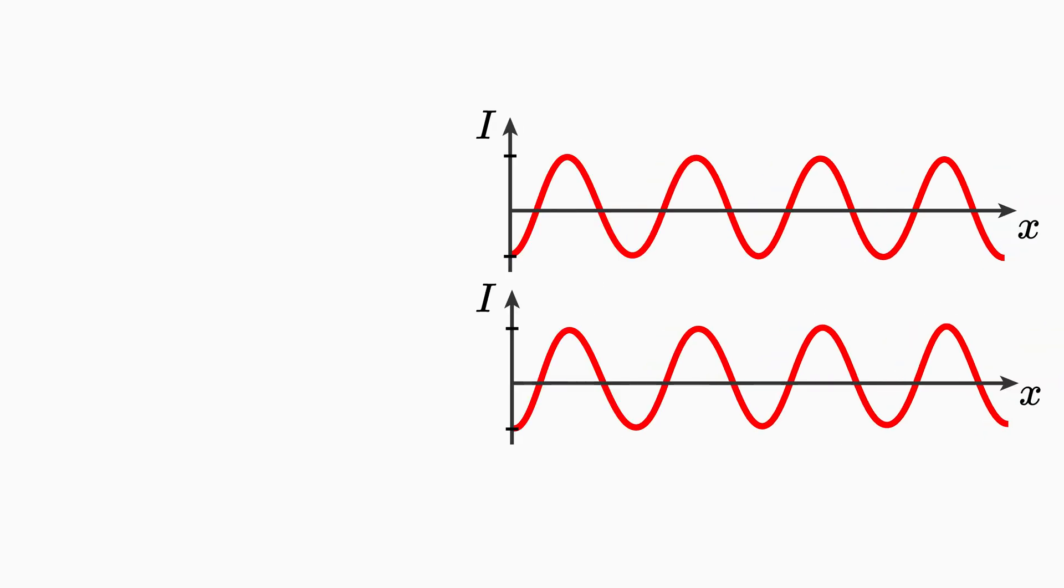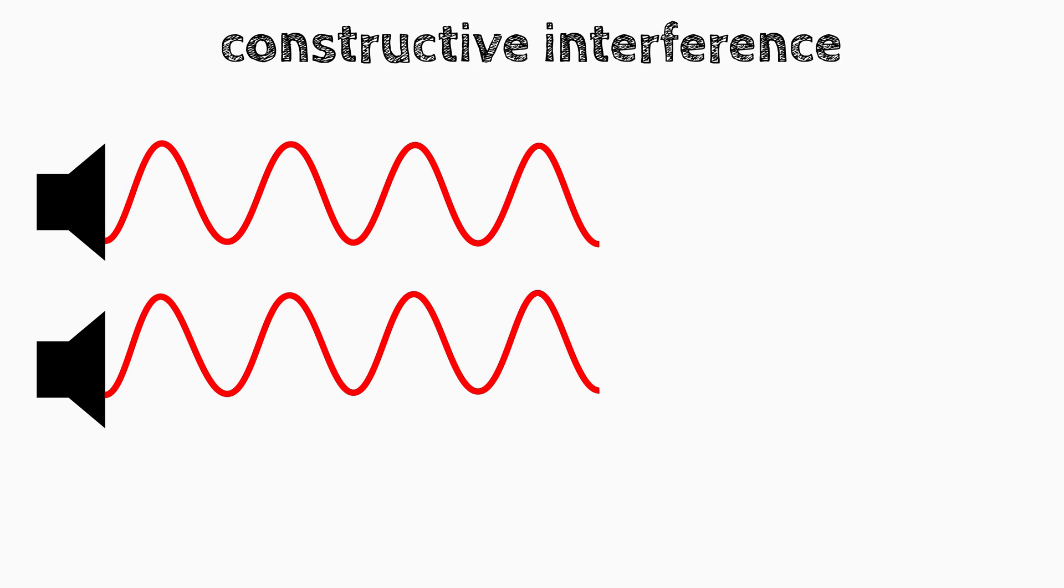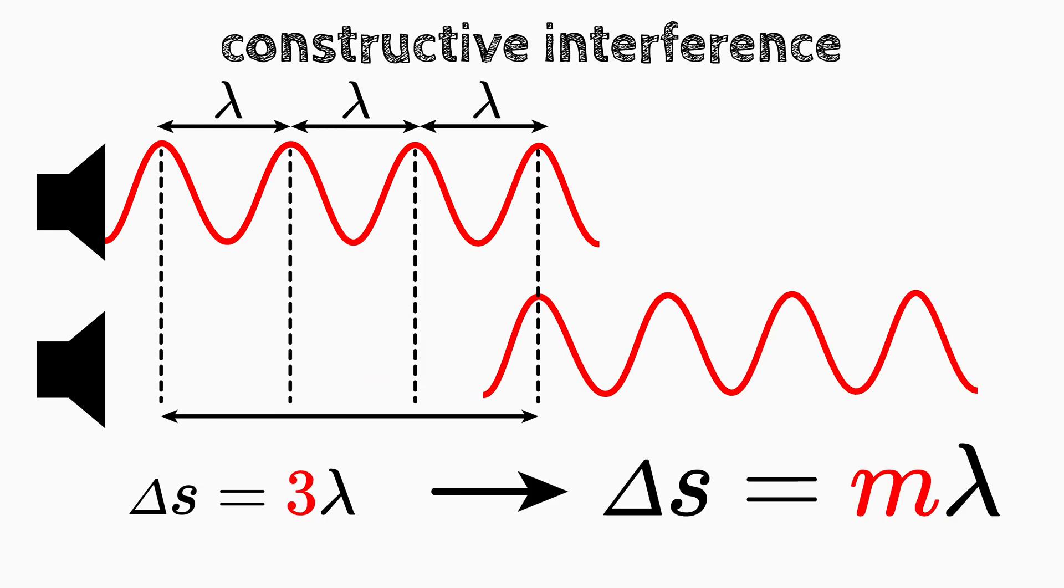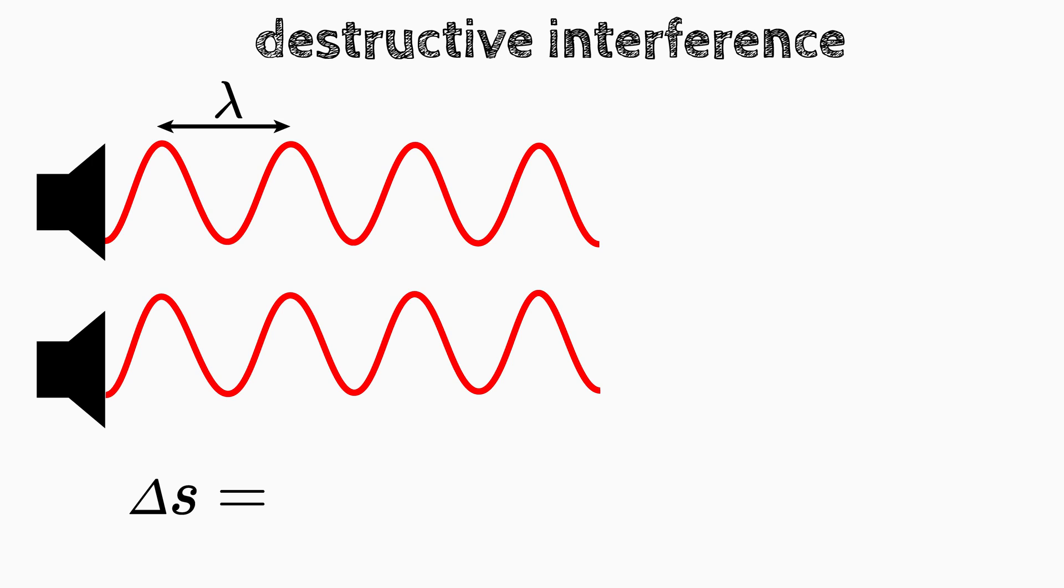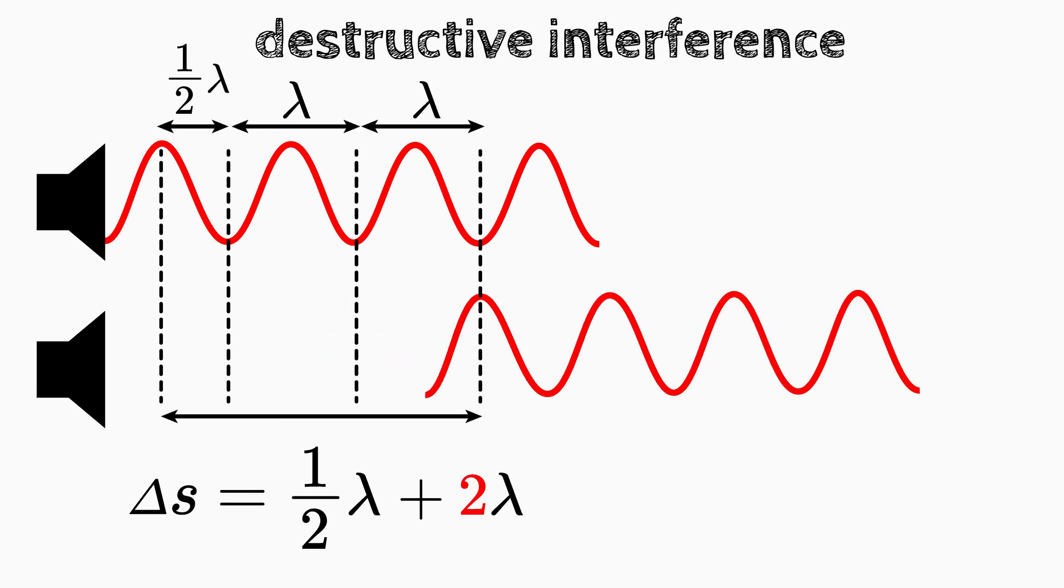In order to understand how this light pattern comes about, you need to know what happens when waves hit each other. They interfere. The waves can interfere constructively or destructively. Constructive interference occurs exactly when the two identical waves have a path difference delta s that corresponds to a multiple of the wavelength, lambda. Delta s is equal to m times lambda. m is an integer. For a destructive interference, we shift the wave by half the wavelength and add a multiple of the wavelength. So the path difference is now one half plus m times lambda.